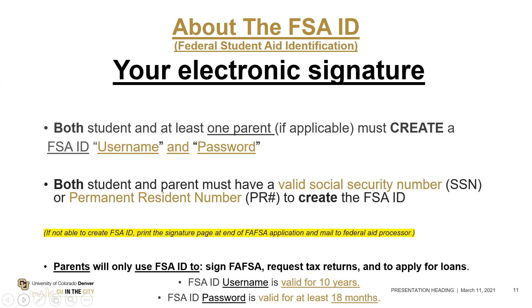The student and parent must have a valid social security number or permanent resident number to create the FSA ID, because it verifies your information through the Social Security Administration. If the parent does not have a valid social security number, the student can go ahead and create theirs, complete the application for both student and parent, and for the parent's social security number just put all zeros. When you get to the end to sign, the student signs with the FSA ID, then prints the signature page for the parent. The parent signs it and mails it to the federal processor — the address is on that signature page. Send it immediately so it matches your FAFSA application.